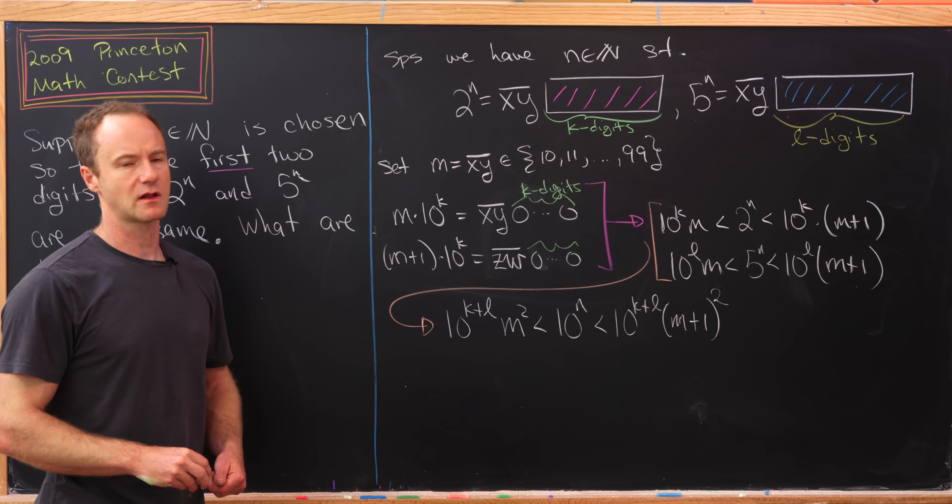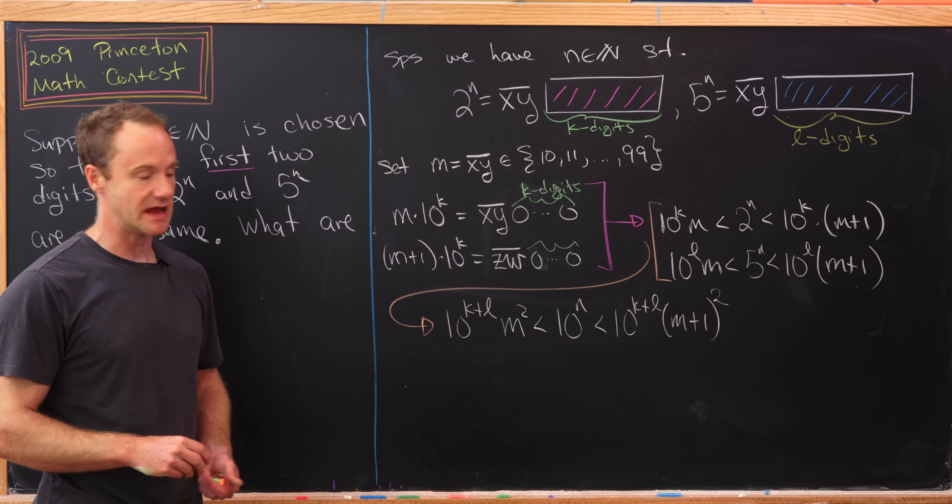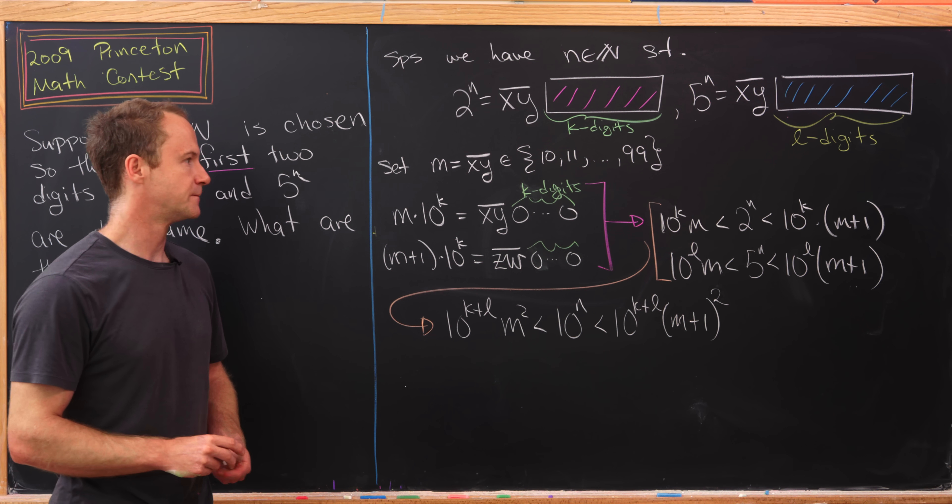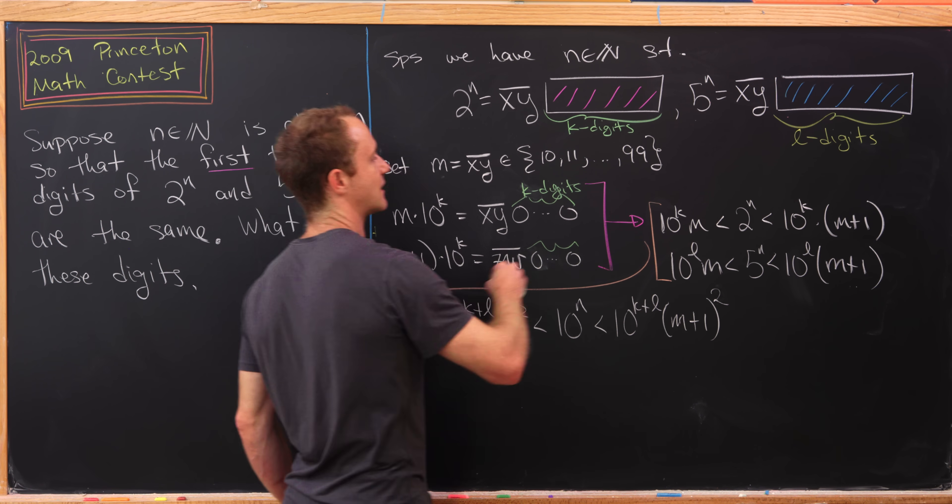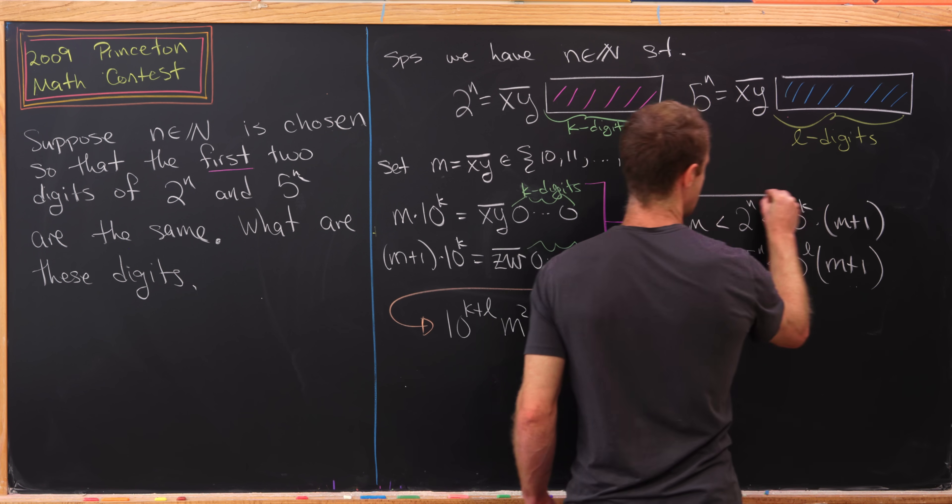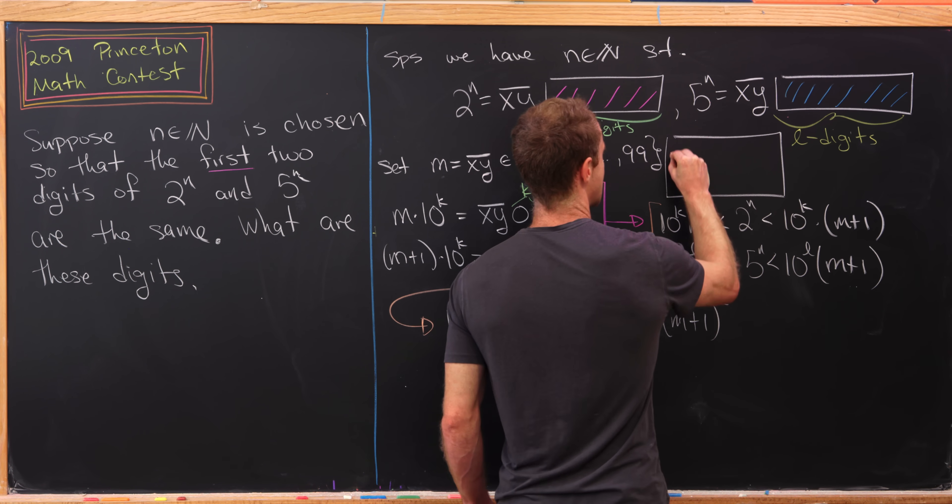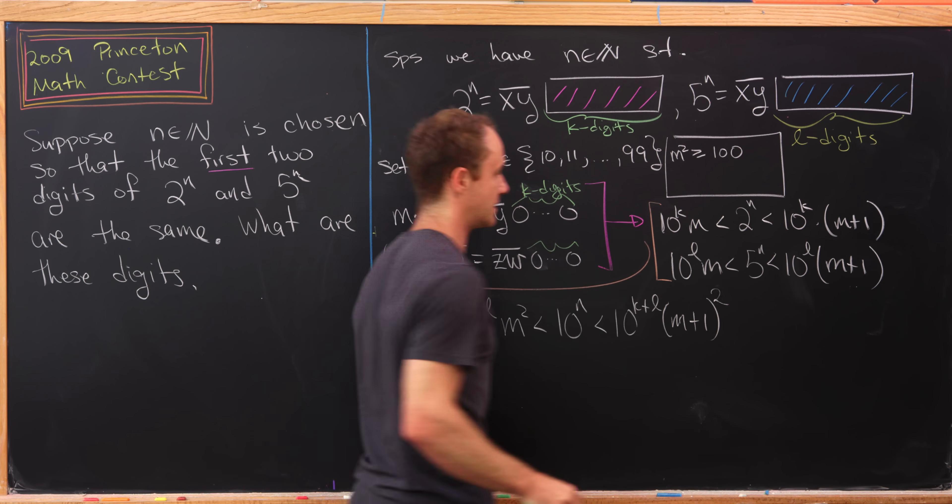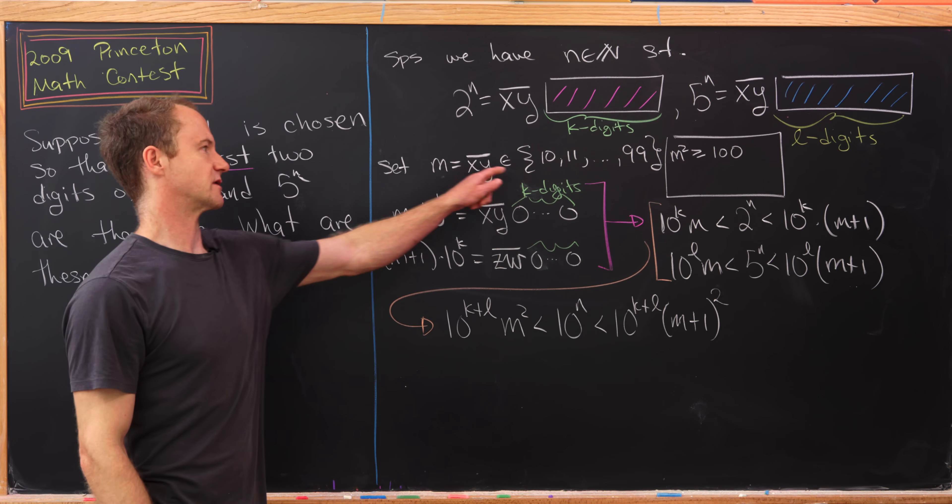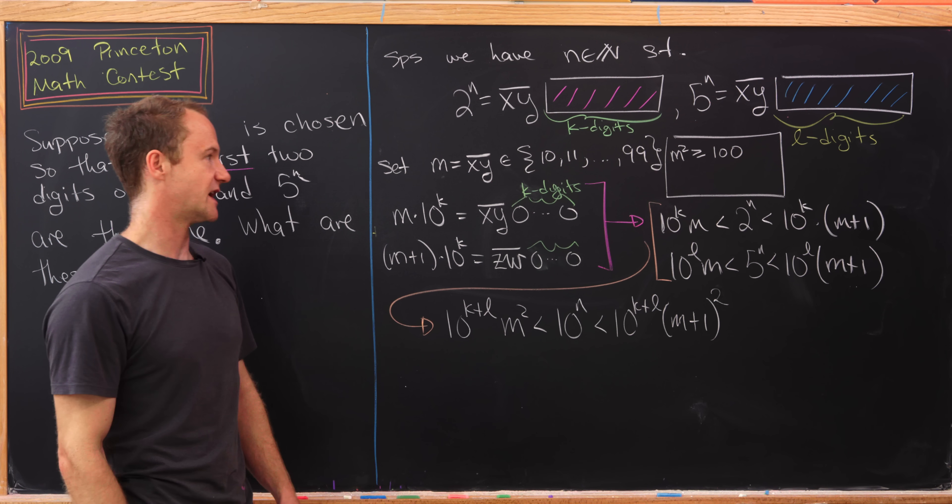Now we'd like to get a handle on the size of m^2 and (m+1)^2. Let's note that m is definitely bigger than or equal to 10, so that means m^2 is bigger than or equal to 100.